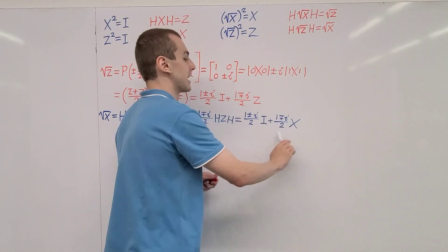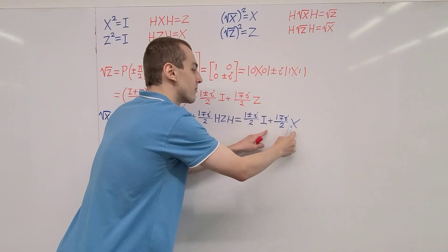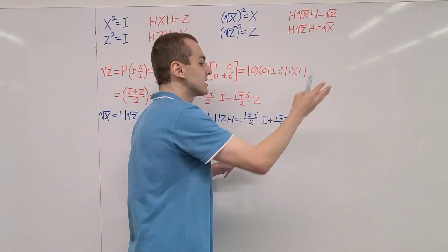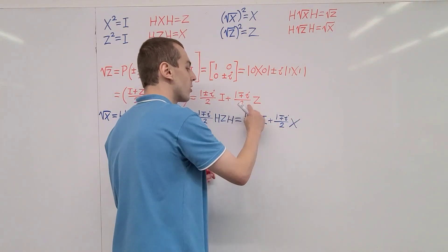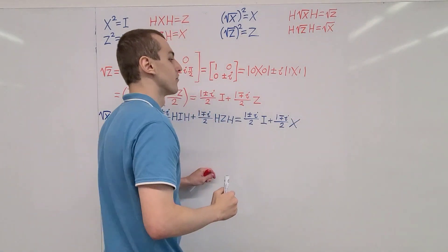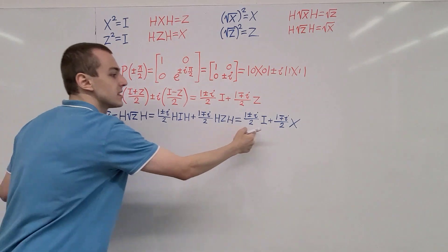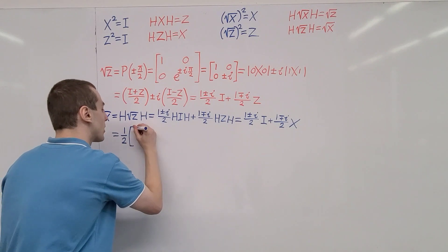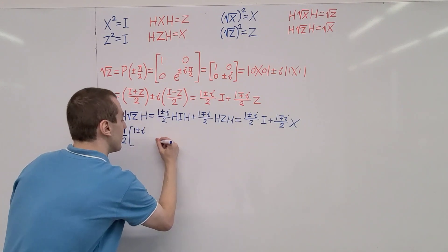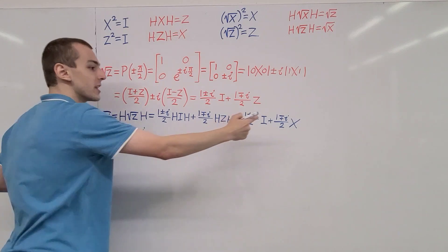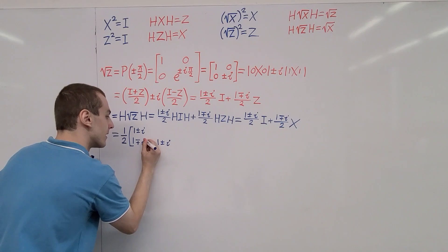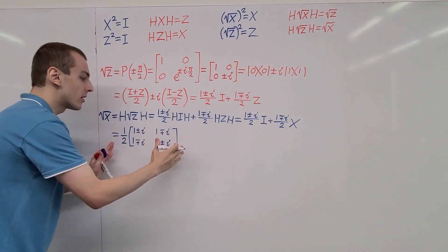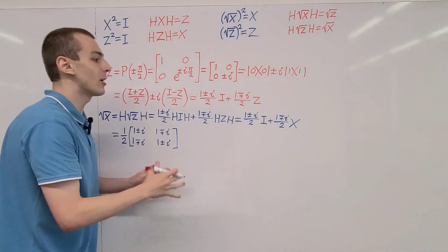Let's write this as a matrix representation. The identity matrix has diagonal entries of 1, while Pauli X has off-diagonal entries. So the identity term appears on the diagonal and the Pauli X term appears on the off-diagonal. Factoring out one half, we get a matrix where the diagonal entries are 1 plus or minus i, and the off-diagonal entries are 1 minus-plus i. If you take the square of this matrix, you will get the Pauli X matrix.